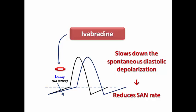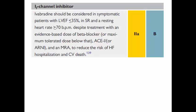Ivabradine has a class 2a recommendation in symptomatic heart failure patients with ejection fraction less than or equal to 35% in sinus rhythm, and resting heart rate still more than or equal to 70 beats per minute, despite treatment with the evidence-based dose of beta blocker or the maximally tolerated dose, plus ACE inhibitor or ARNI plus MRA, aiming to reduce the risk of heart failure hospitalization and cardiovascular death — so both mortality benefit and symptomatic benefit.